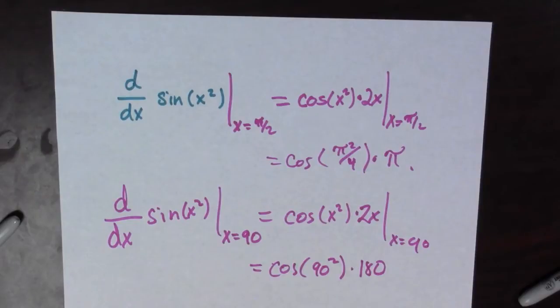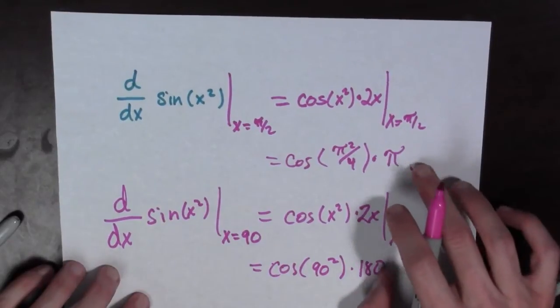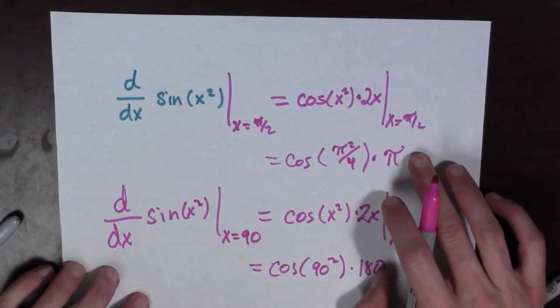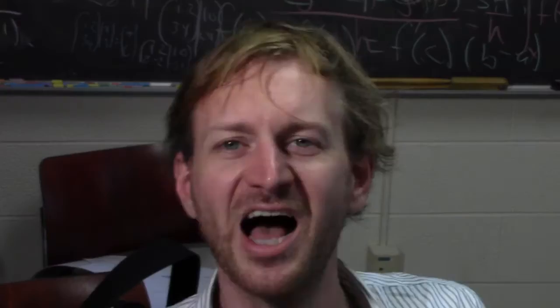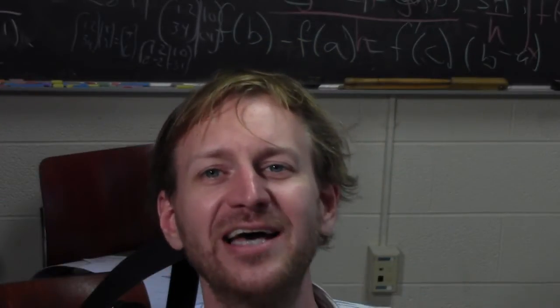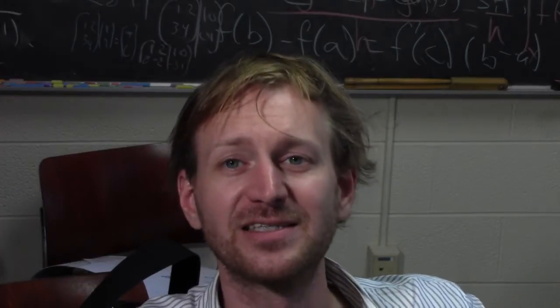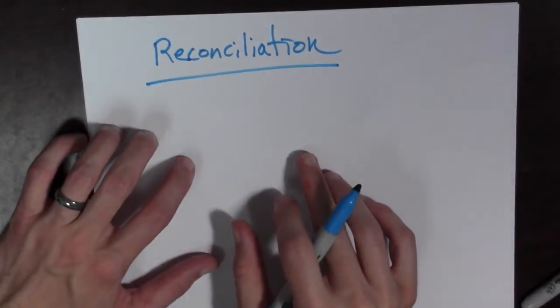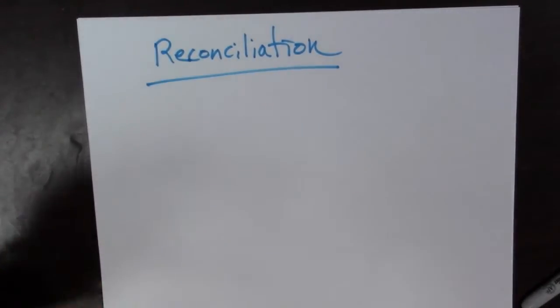This is equal to cosine of 90 squared times 180. Now, look, 90 squared is, these things here are not equal. How do we reconcile this? Is there any sort of way that we can make sense out of this? So how do we reconcile this fact?